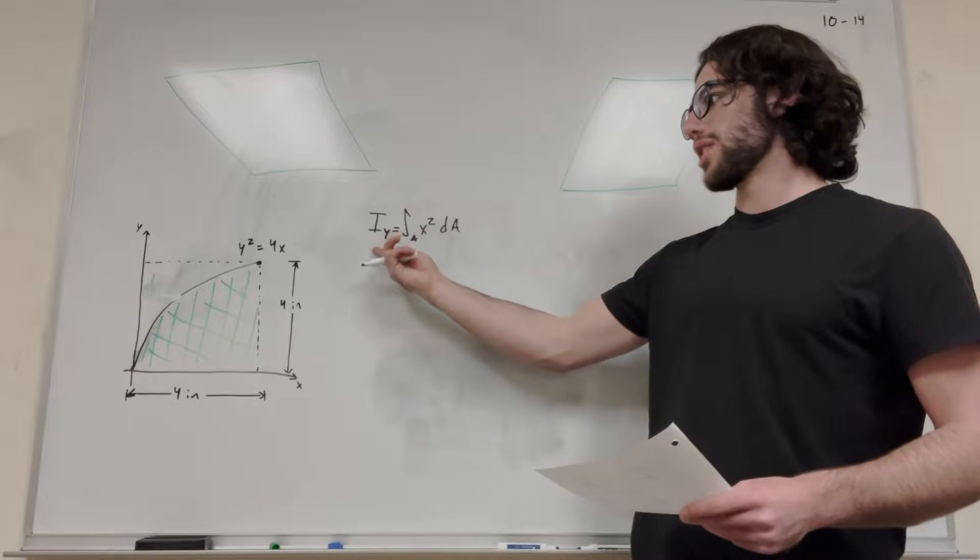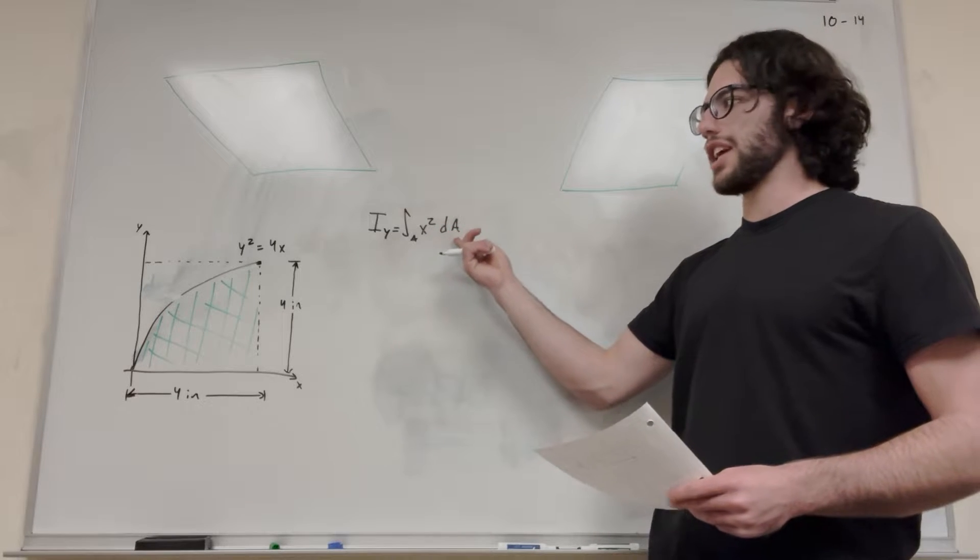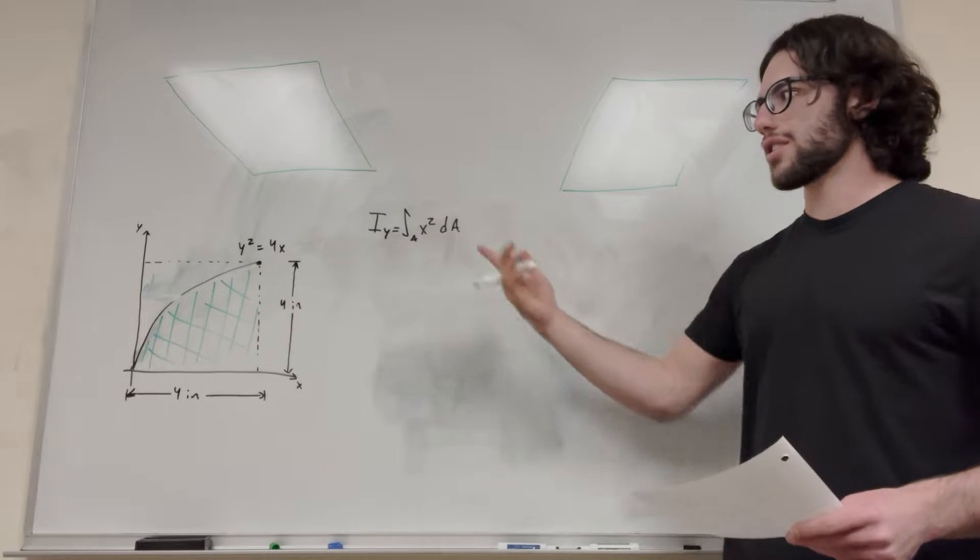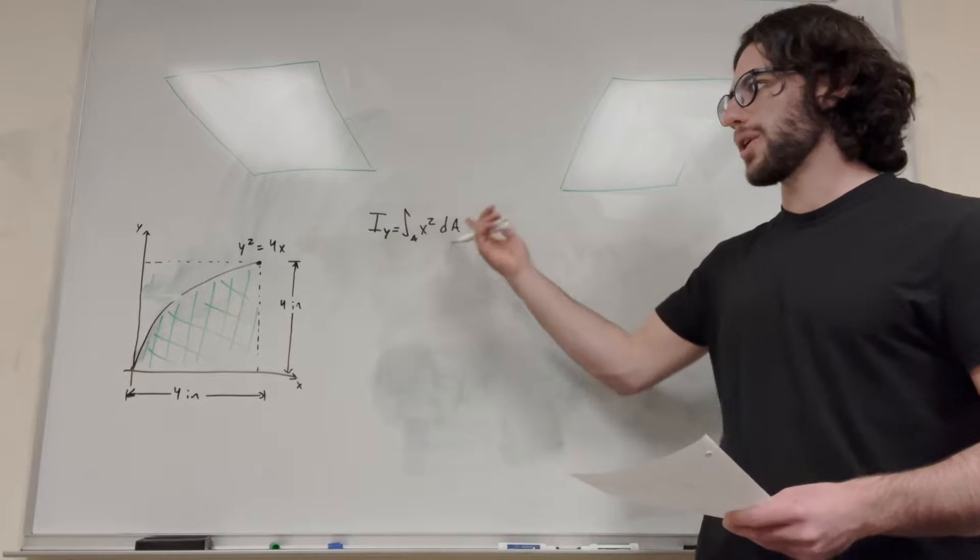So the formula we're going to use is I_y equals the integral over the area of x squared dA. To get this integral into something we can actually use, we need to rearrange our bounds. So let's figure out what dA is equal to.